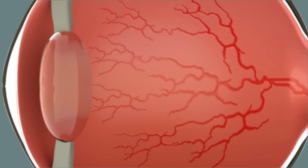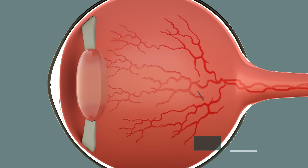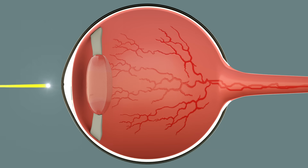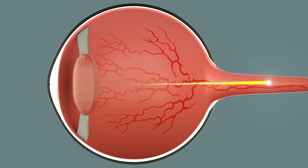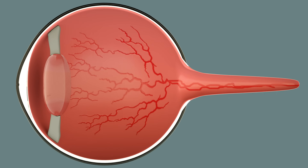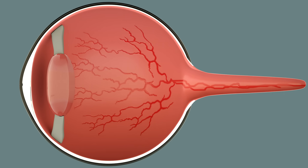The retina is located at the back of the eyeball and is made up of millions of light-sensitive cells. The retina is in charge of receiving the light and transmitting this information to the brain through the optic nerve.